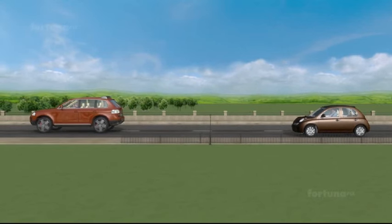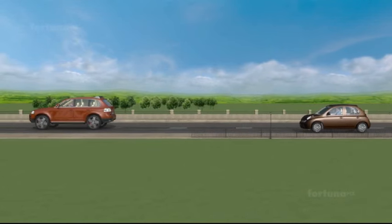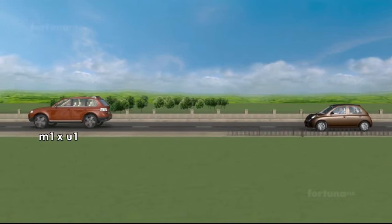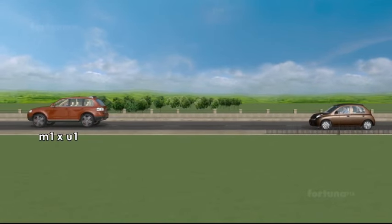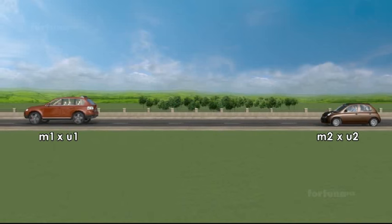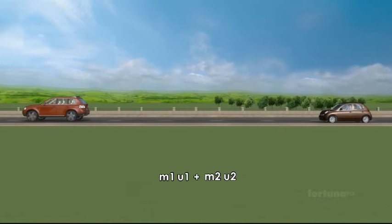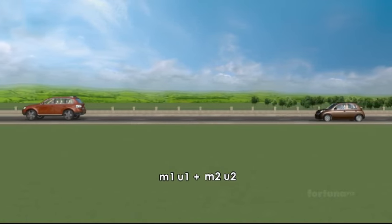Because momentum is the product of mass and velocity, the momentum of the bigger car can be expressed as M1 into U1, and the momentum of the smaller car can be expressed as M2 into U2. To determine the total momentum of both cars would be M1 U1 plus M2 U2.